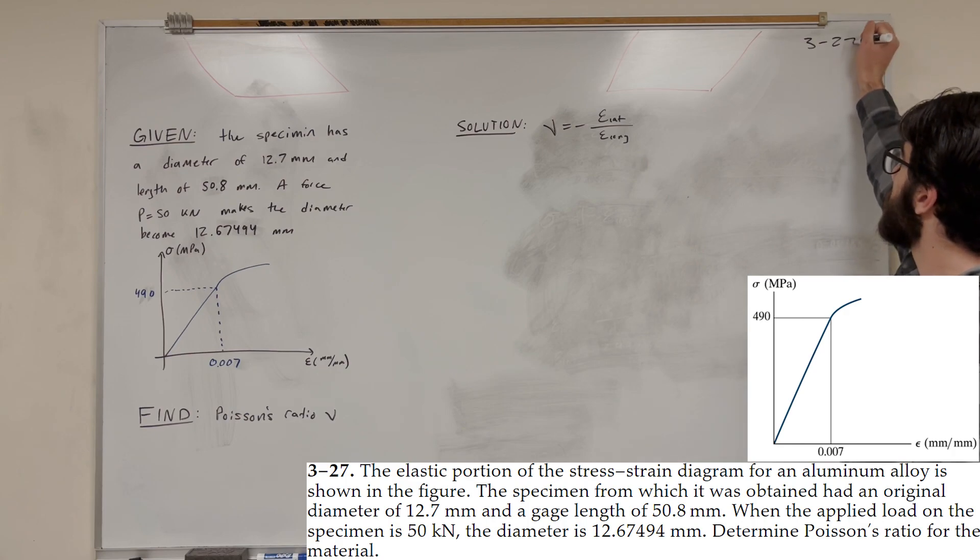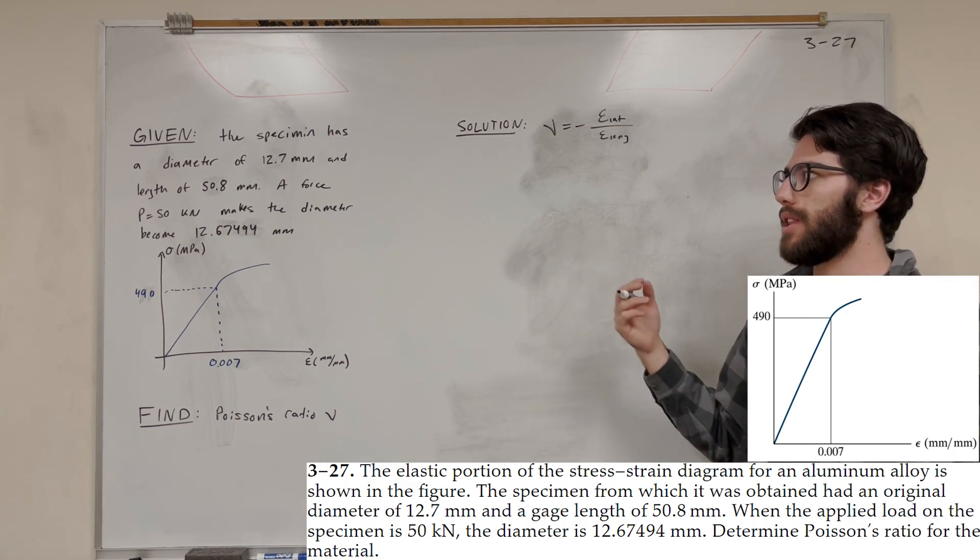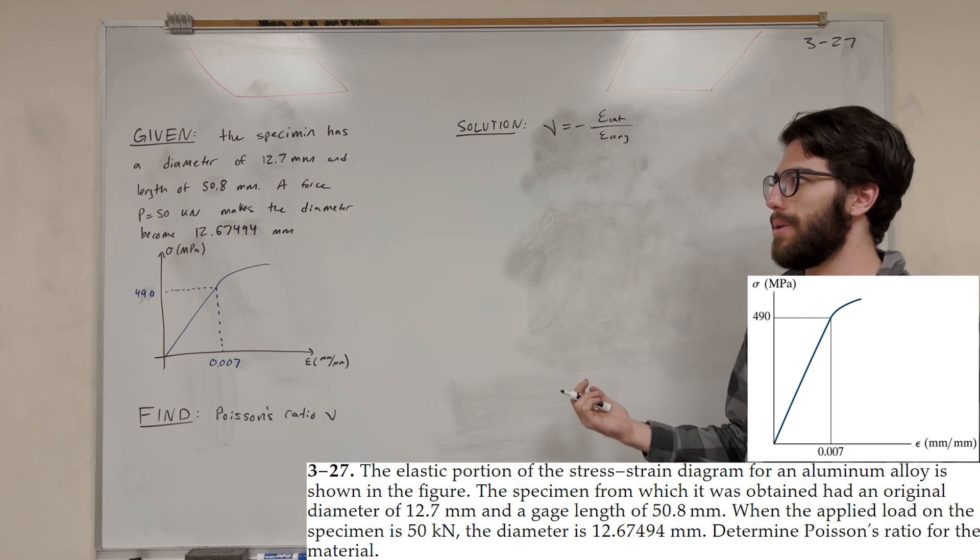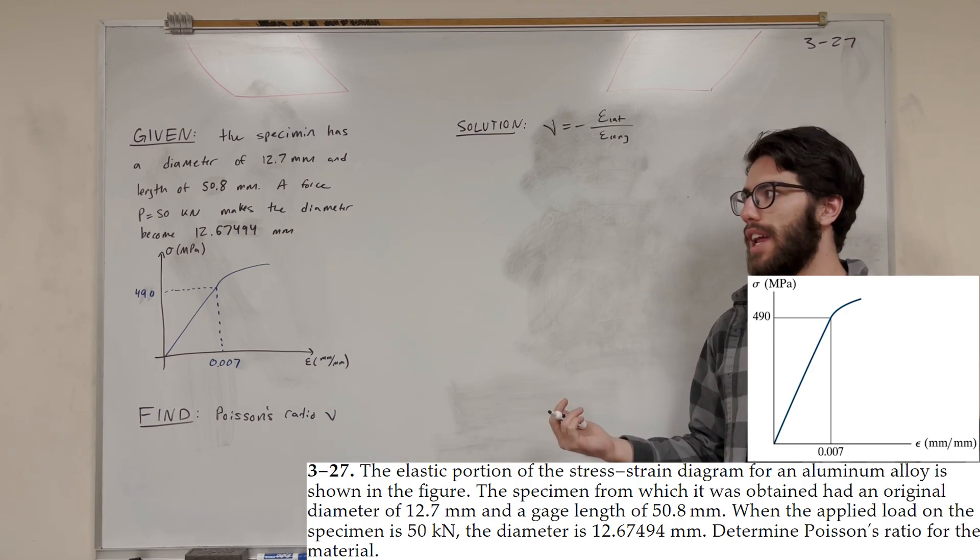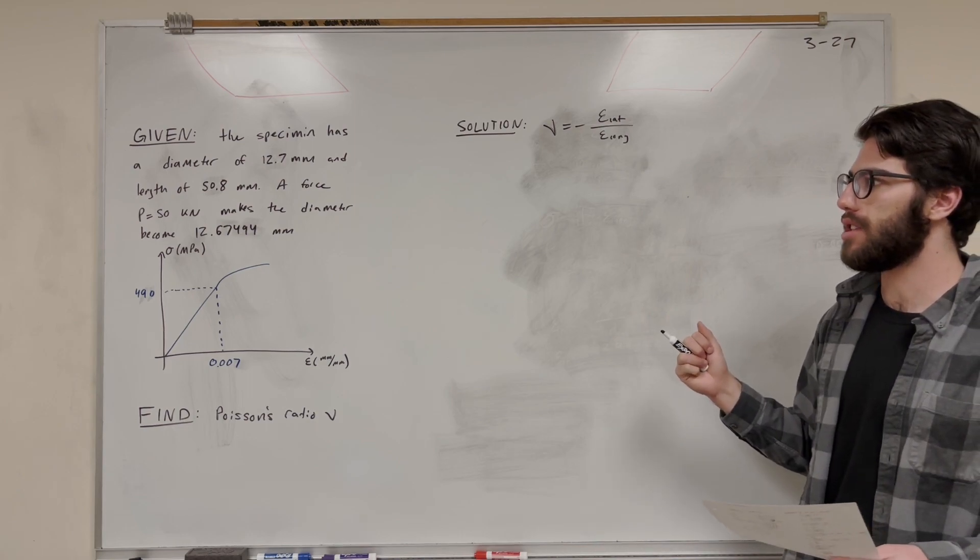We solved a similar problem just like this, 3.26, but now we're on 3.27. So now we have a specimen with a diameter of 12.7 millimeters and a length of about 50.8 millimeters. And we're applying a force to it, and it makes the diameter smaller.